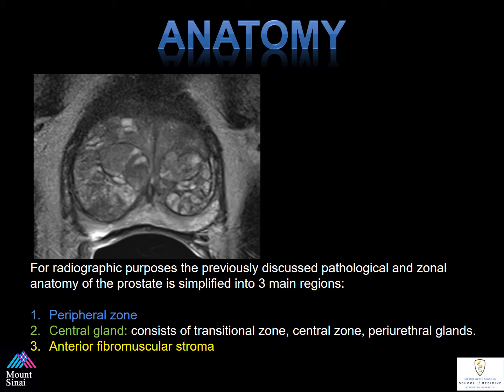The anatomy of the prostate is grouped into three regions. First, the peripheral zone, where 70% of prostate cancers are found. The second is the central gland, which is a combination of the transition zone, central zone, and periurethral glands. And finally, the anterior fibromuscular stroma. This is an area that needs to be evaluated for malignancy, as well as included when you perform prostate segmentation for MR ultrasound fusion-guided biopsies. If this area is not included, your segmentation and fusion will not line up between the ultrasound and the MRI.